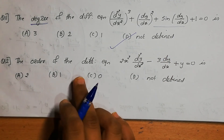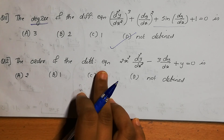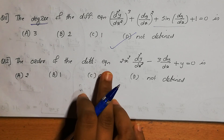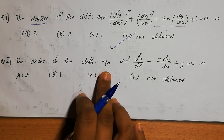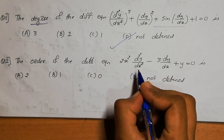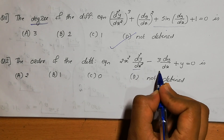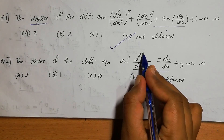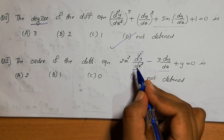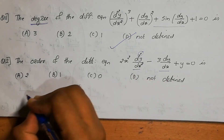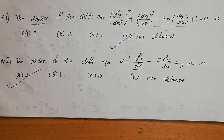Question number 12: The order of the differential equation. Order means the highest order derivative present. The equation contains d²y/dx² and dy/dx. The highest order is d²y/dx², so the order is 2. Therefore, option A is the correct answer.